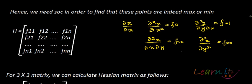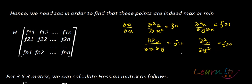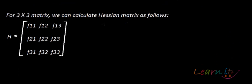How does the Hessian help determine whether points are maxima or minima? For a 3×3 matrix, the Hessian contains second-order partial derivatives: f₁₁, f₁₂, f₁₃ in the first row; f₂₁, f₂₂, f₂₃ in the second; f₃₁, f₃₂, f₃₃ in the third. We then calculate the principal minors.